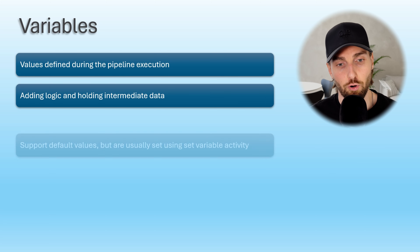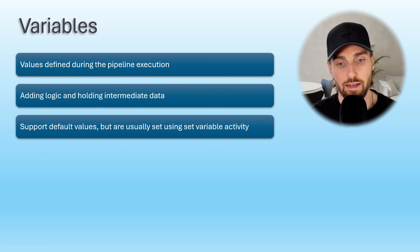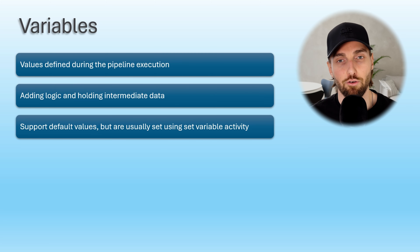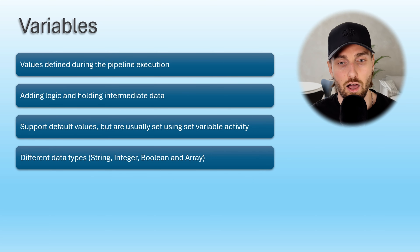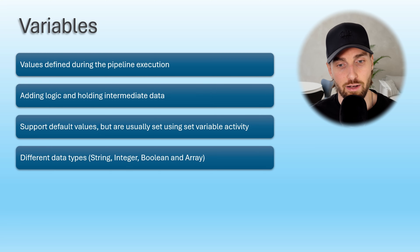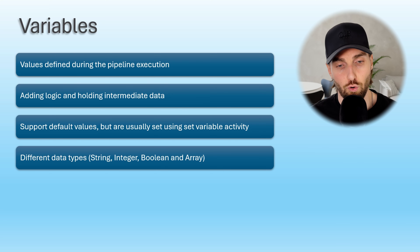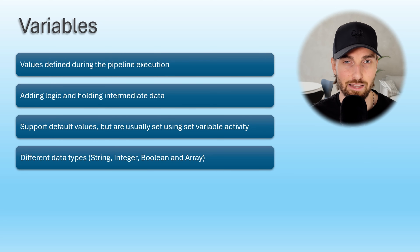Like parameters, variables also support using default values, and if the variables are not set using the set variable activity, then the default value is used as the value for that variable. Variables also support a few different data types, however there are fewer choices compared to parameters. Currently variables support four data types: string for text values, integer for whole numbers, boolean for true or false values, and array for a list of items that could be any data type.